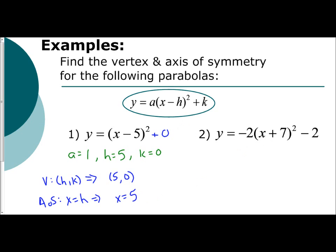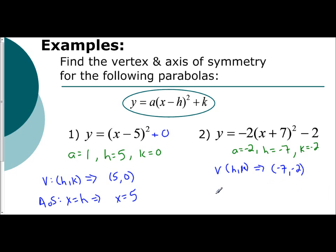And the last one, we have an a of negative 2. Jump to k — k is negative 2. Identify the h: it's the opposite of what you see, so it's negative 7. So your vertex is the coordinate h, k, which gives us the coordinate (negative 7, negative 2). Our axis of symmetry is the equation x equals h, so that's x equals negative 7.